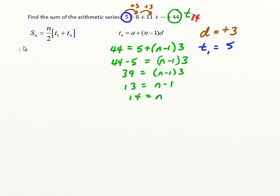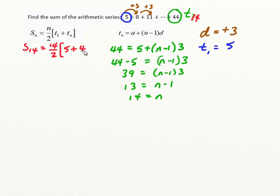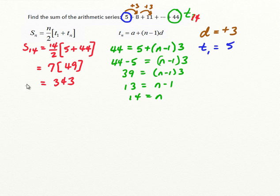Now knowing that information, I can ask for the sum and I know n is 14. So it's going to be 14 over 2 times (t1 plus tn). t1 is 5 and tn is now 44. 14 over 2 is 7, and 5 plus 44 is 49. So 7 times 49 is equal to 343. That is the sum of the first 14 terms — in fact, the sum starting at 5 and ending at 44.